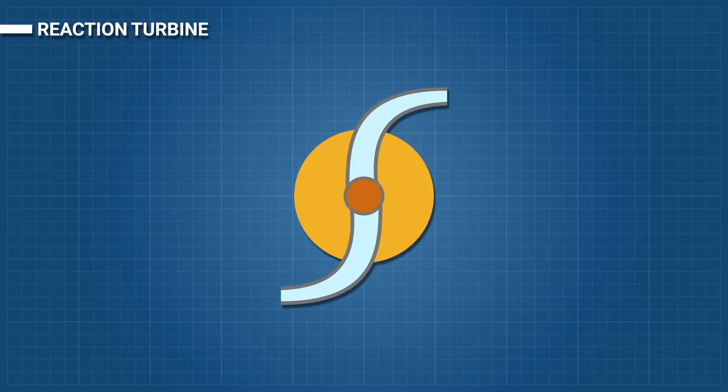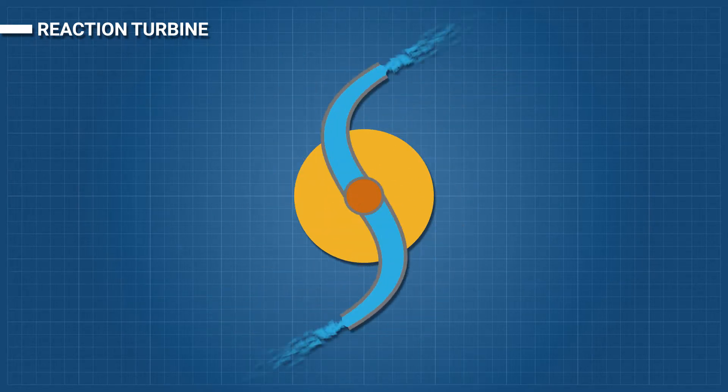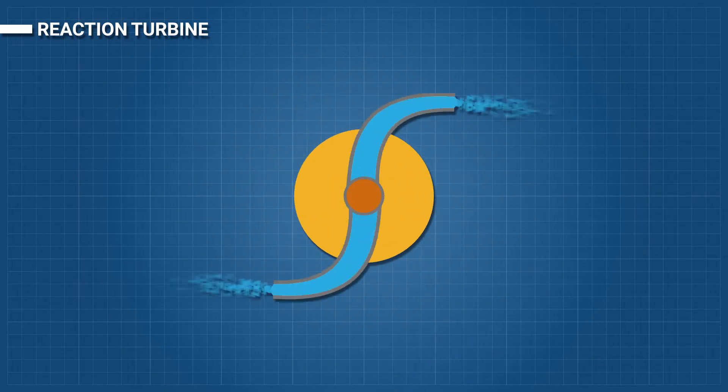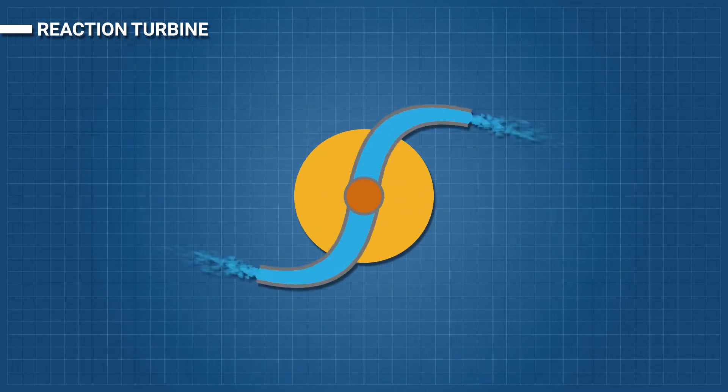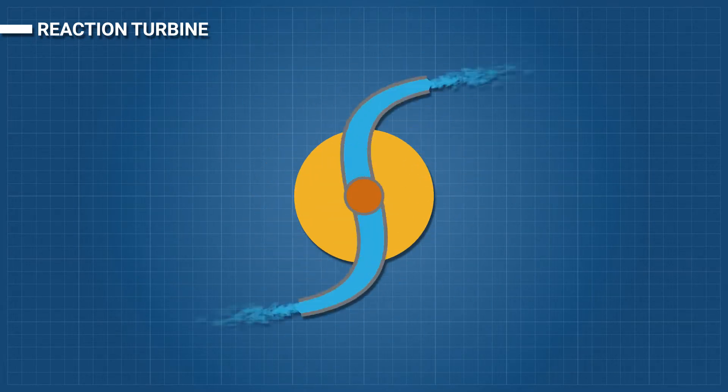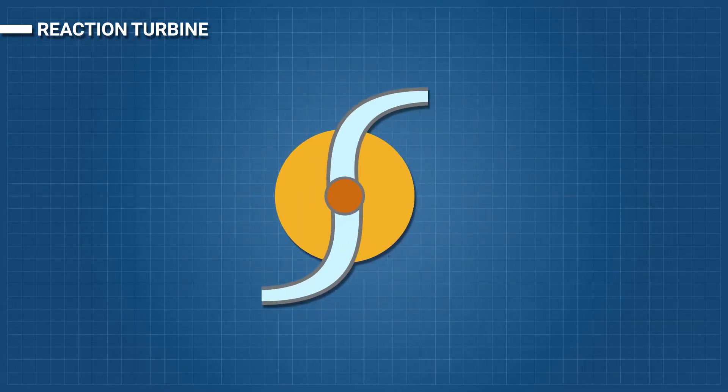A reaction turbine develops power from the combined action of pressure and moving water. The runner is placed directly in the water stream flowing over the blades rather than striking each individually. Reaction turbines are generally used for sites with lower heads and higher flows than that of impulse turbines.